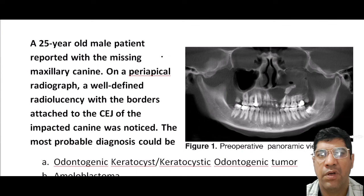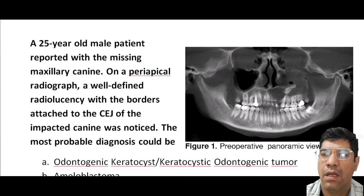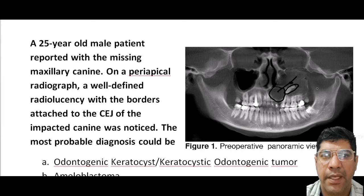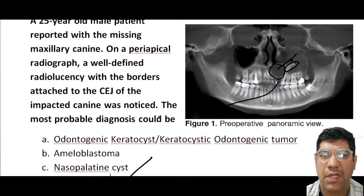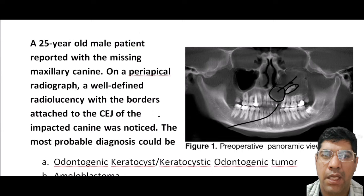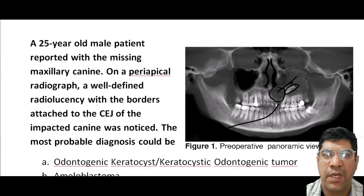A 25-year-old male presents with a missing maxillary canine. On the radiograph, there is a radiolucency with borders attached to the cementoenamel junction of an impacted canine. The most probable diagnosis is a dentigerous cyst. Dentigerous cysts are formed around the crown of an impacted or unerupted tooth. In this case, the maxillary canine likely failed to erupt properly, became impacted, and led to formation of a dentigerous cyst.